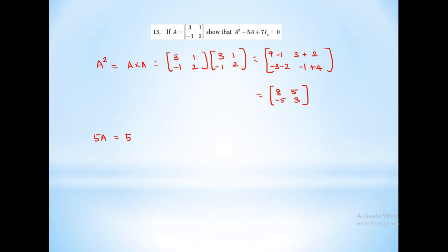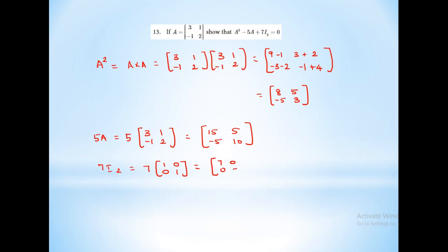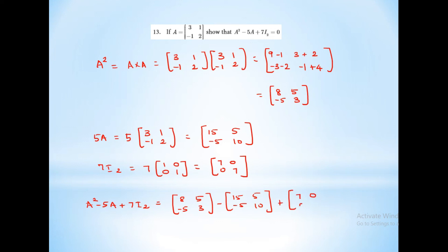7 times I₂ equals 7 times 1, 0, 0, 1, which equals 7, 0, 0, 7. So A squared minus 5A plus 7I₂ equals 8, 5, minus 5, 3, minus 15, 5, minus 5, 10, plus 7, 0, 0, 7, which equals 8 minus 15 plus 7, 5 minus 5 plus 0, minus 5 plus 5 plus 0, 3 minus 10 plus 7.